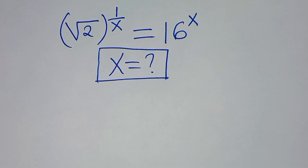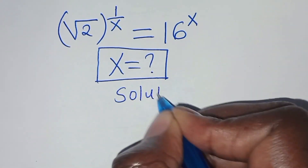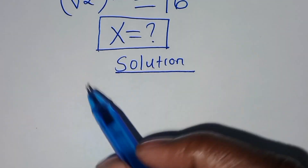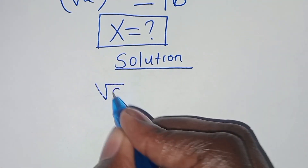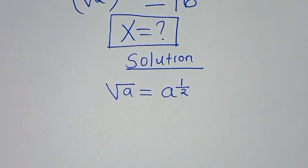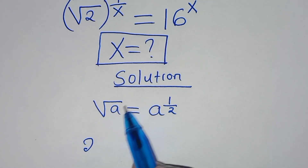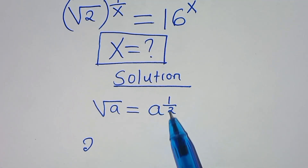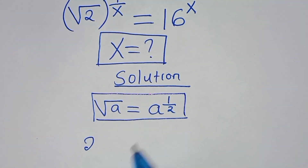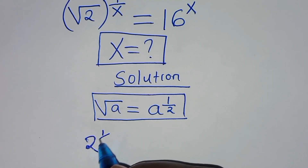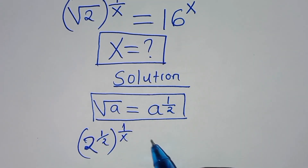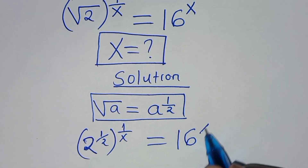Let's present a solution. We can express the square root of 2 — remember, if you have the square root of a, this is the same thing as a raised to power 1/2. So applying this property, we now have 2 raised to power 1/2, raised to power 1 over x, which is equal to 16 to power x.